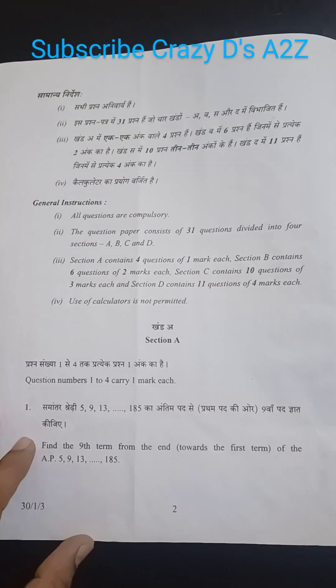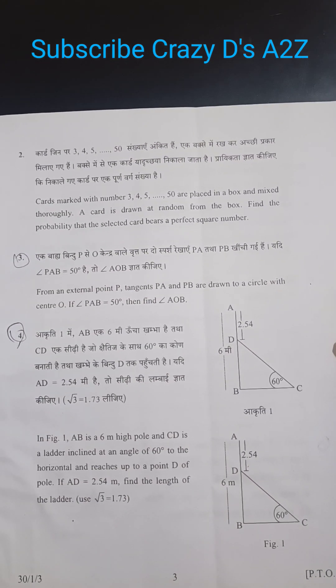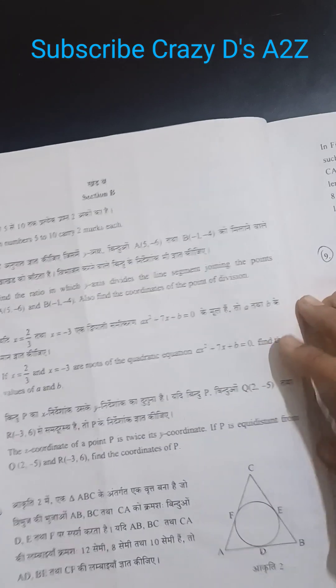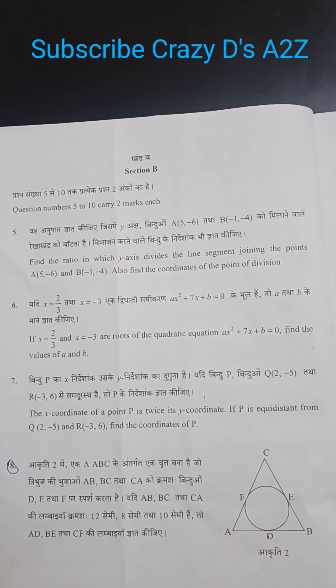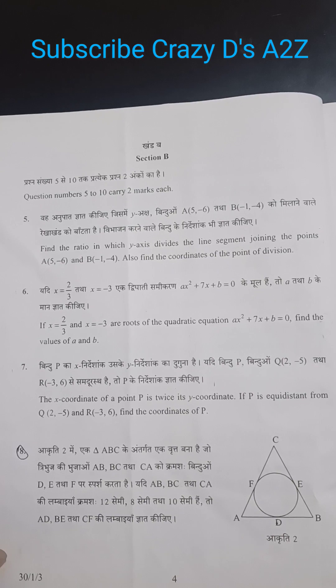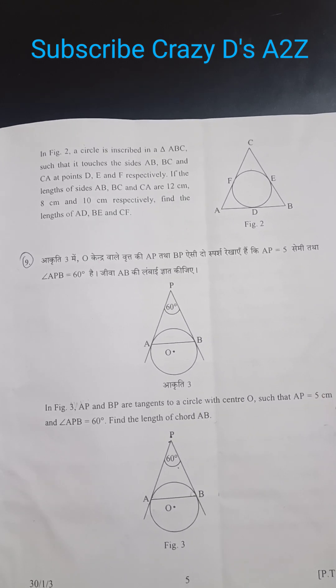This is the question paper. Here are the questions from 2 to 4. The questions are written in both languages. This is Section B having questions 5 to question 8 in this page. This is question 9.